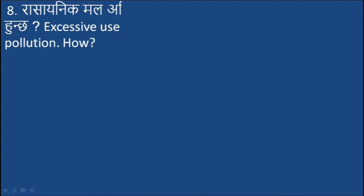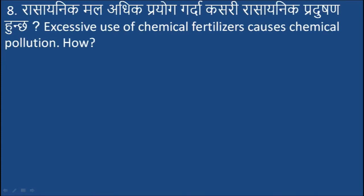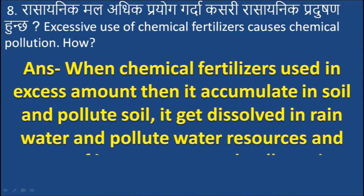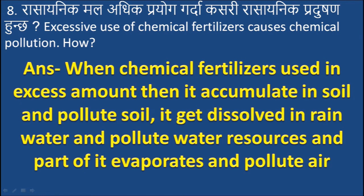Question 8: How does excessive use of chemical fertilizer cause chemical pollution? Answer: When chemical fertilizer is used in excess, it accumulates in soil and pollutes it. It dissolves in rainwater and pollutes water resources, and part of it evaporates and pollutes the air.